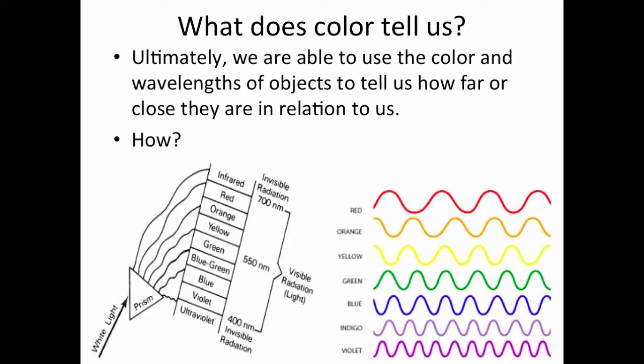So what does color tell us? Ultimately, we are able to use color and wavelength of objects to tell us how far or how close they are in relation to us in space.